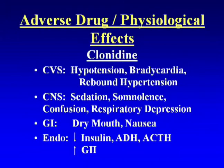Baclofen is used in neuraxial administration, primarily for spasticity, but also as an analgesic agent combined with opiates and/or local anesthetic and/or clonidine. Its significant effects span multiple systems: central nervous system, GI, cardiovascular, genitourinary, respiratory, and musculoskeletal. Importantly, if there is a baclofen overdose, physostigmine administration is an antidote for the adverse effects.